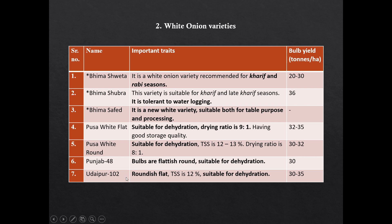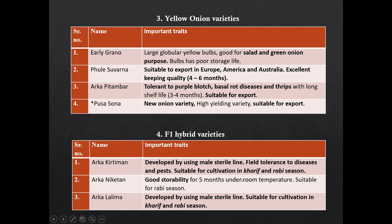Phule 4102 has a bulb shape that is roundish flat and is also suitable for dehydration. Yellow onion varieties: Yellow color onion varieties are Early Grano, Pusa Swarna, Arka Pitambar, and Pusa Sona. Pusa Sona is a new variety suitable for export. Most of the yellow onion varieties are suitable for export to western countries like Europe and America.